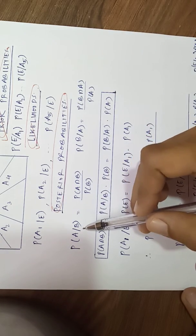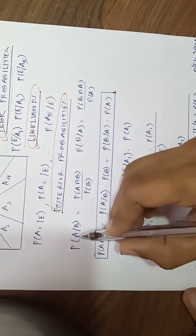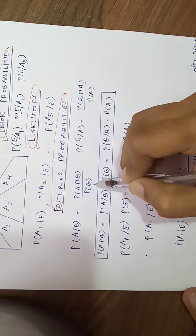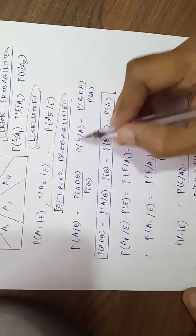Now we have seen this multiplication theorem - conditional probability. Probability of a given b is probability of a intersection b upon probability of b.